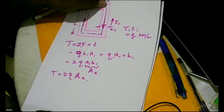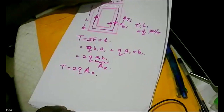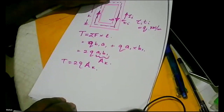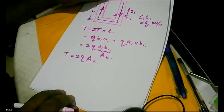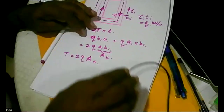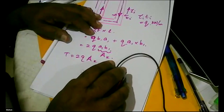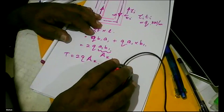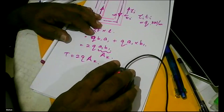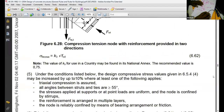Yes sir, that is clear. So that is a simple equation that is applicable. Now we look at the code provisions. Here you can see the Eurocode — we have to go to Section 6 because we are designing.